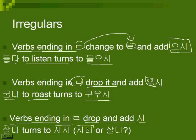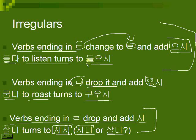Now, 사다 to buy has the same honorific base as 살다 to live — both become 사시. How do you tell which one's which? You simply have to look at the context, because they are both identical now. That's what's kind of annoying. But you won't mix up verbs ending in ㄹ because it just drops. For example, there's 들다 to lift or hold — but you won't mix it up with 듣다, because 들다 would be 드시.